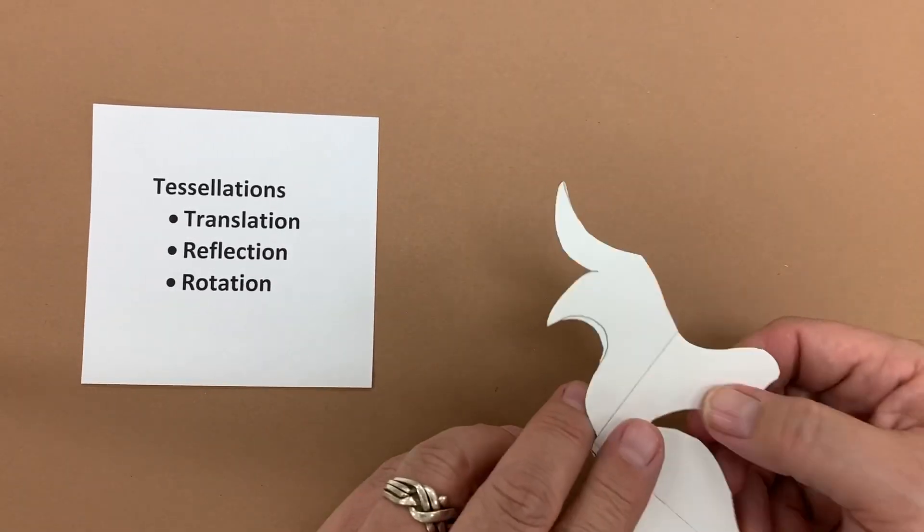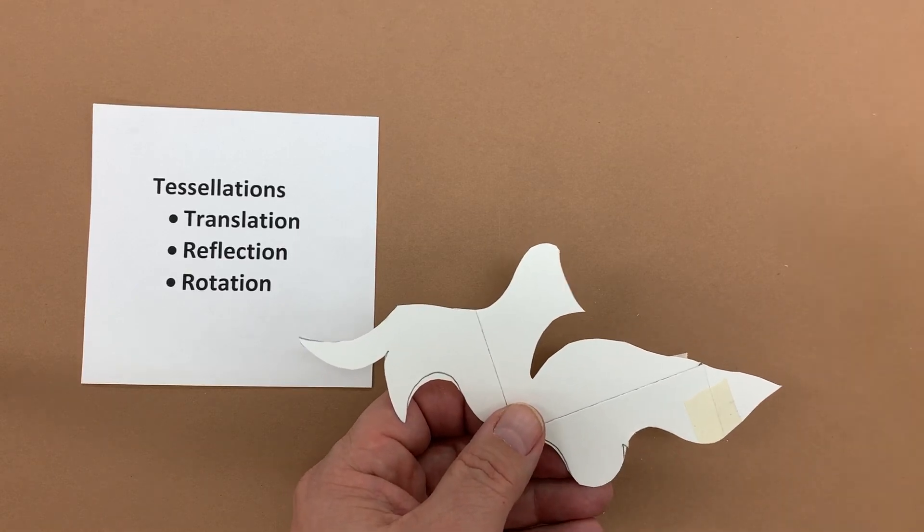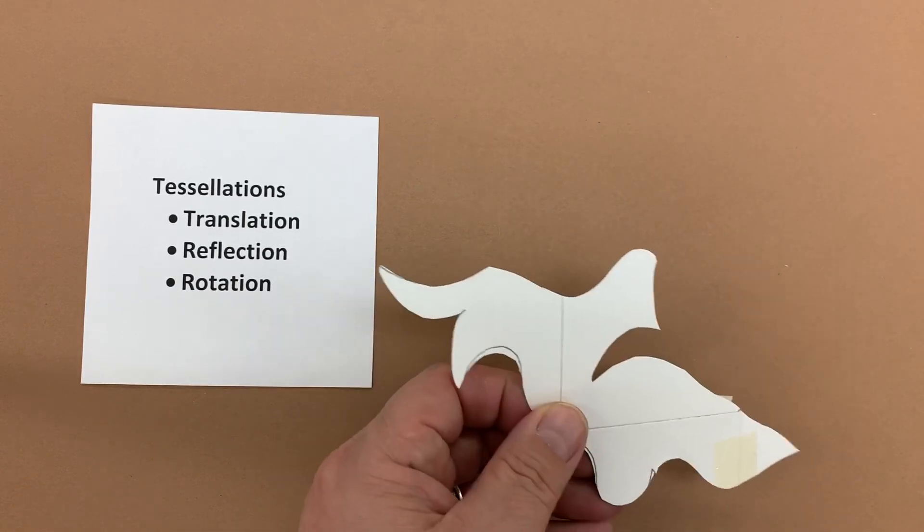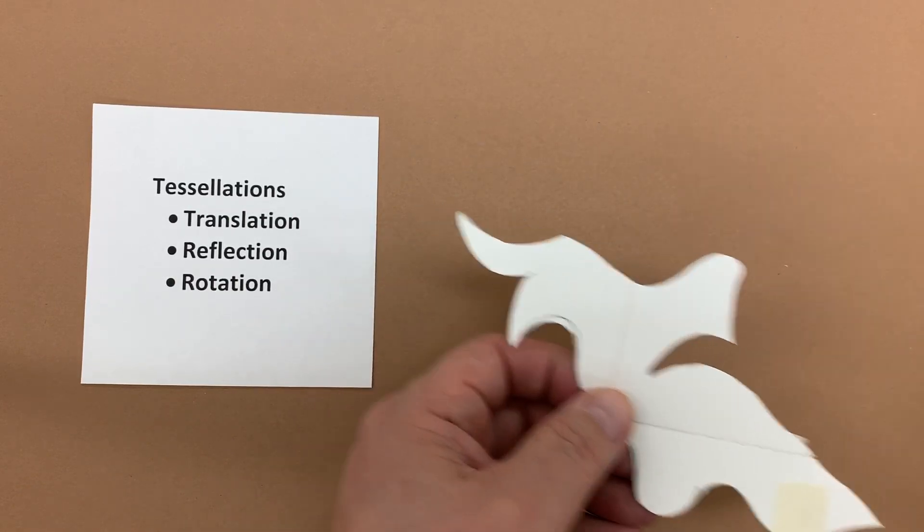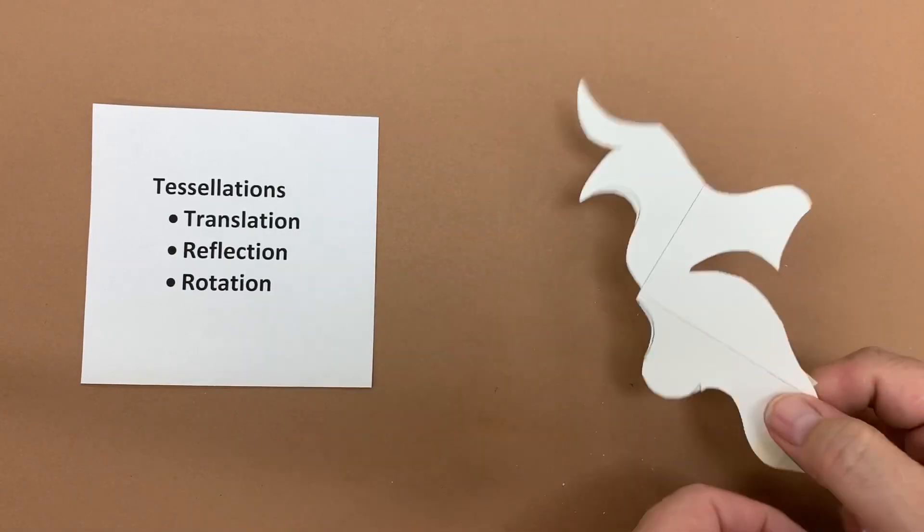And now I have a tessellation piece. It's got a different sort of look than the ones that we did with translation. Reflection has a different sort of shape about it. I'm going to do one more without drawing the line so you can see the technique.